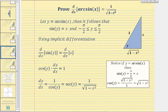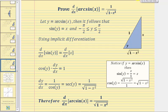Therefore we have our proof: the derivative of arc sine x with respect to x equals one divided by the square root of the quantity one minus x squared. Notice that wherever the derivative is defined, this value would be positive, which means wherever the derivative function value is defined, the slope of the tangent line would be positive.